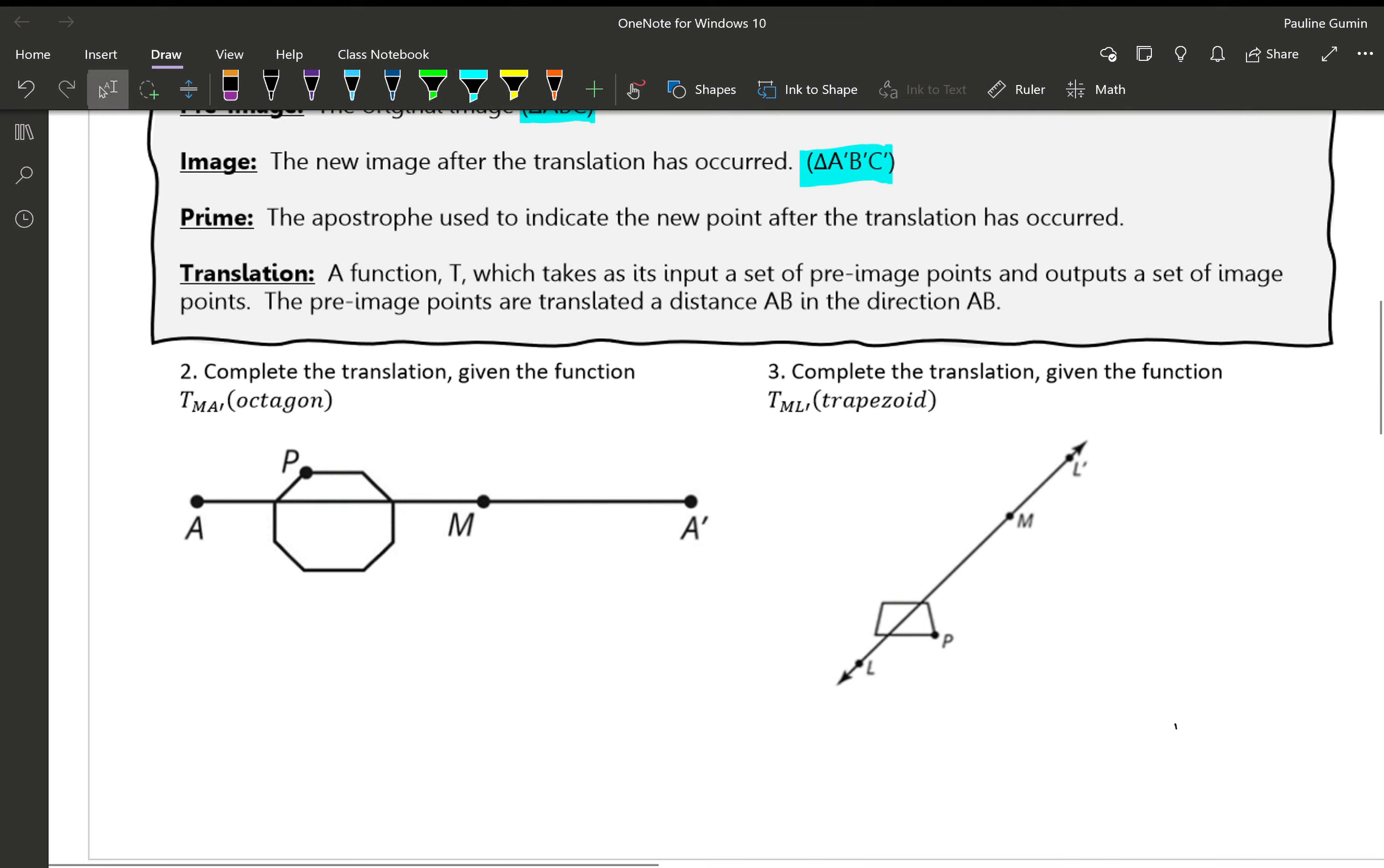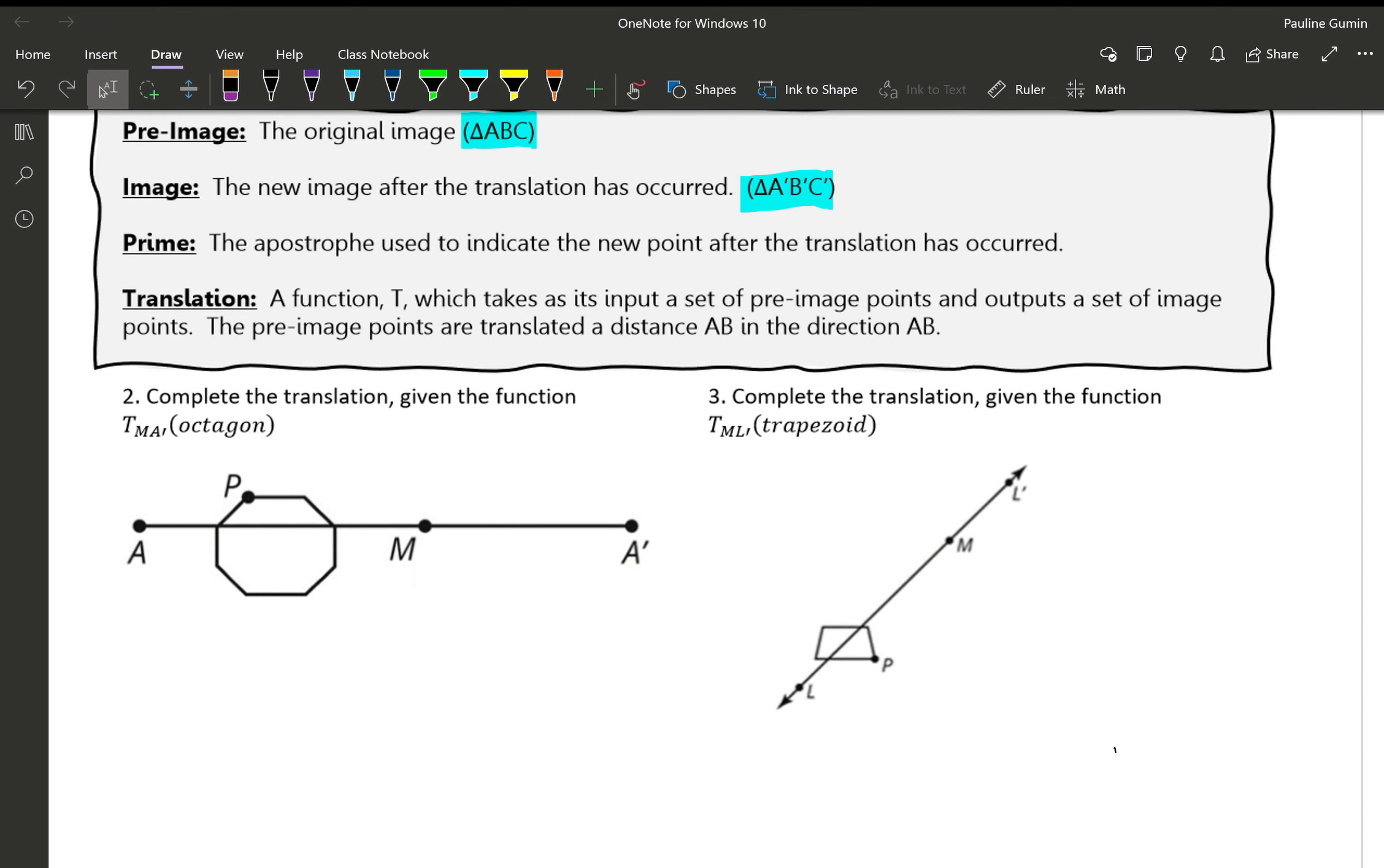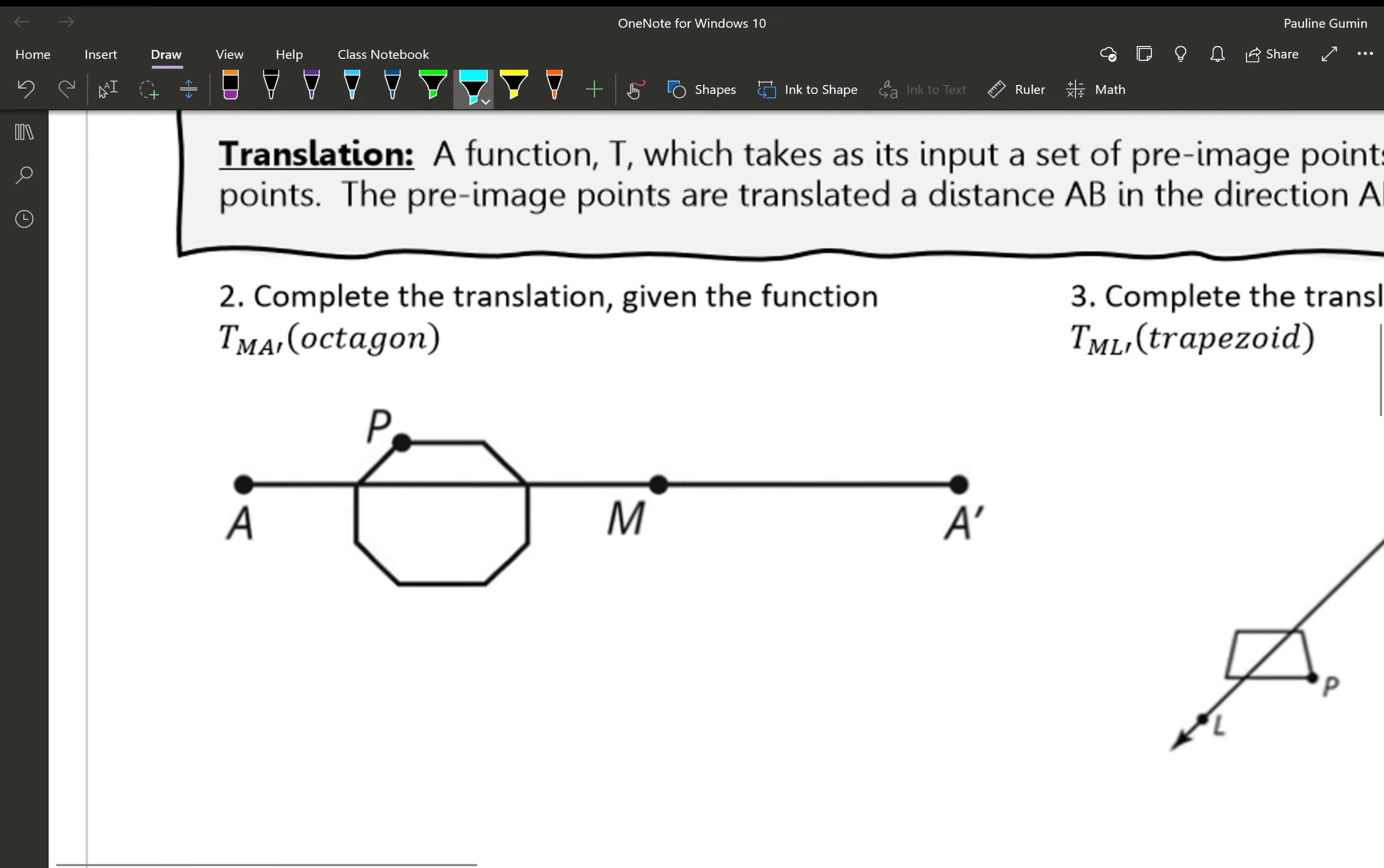Lastly, let's define translation as a function. A function t which takes as its input a set of pre-image points and outputs a set of image points, meaning it takes in the original and gives out the new one. A pre-image points are translated a distance AB in the direction of AB. That I think will be best understood when I show you what that is.